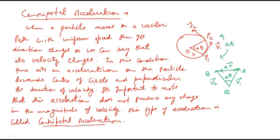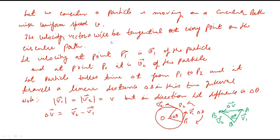Here you can see that the particle is moving on the circumference of a circle with uniform speed. At point P1 its velocity is v1 and at point P2 its velocity is v2. The velocity vector will be tangential at every point on the circular path. Here you can see the velocity vector v1 and the velocity vector v2.